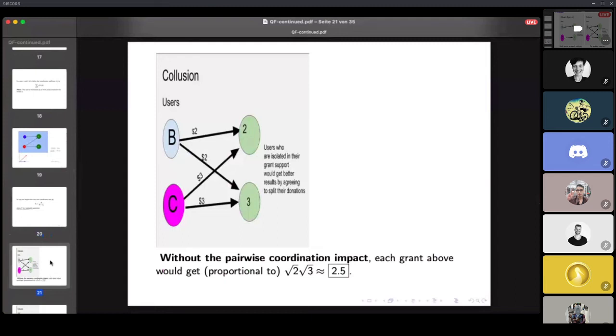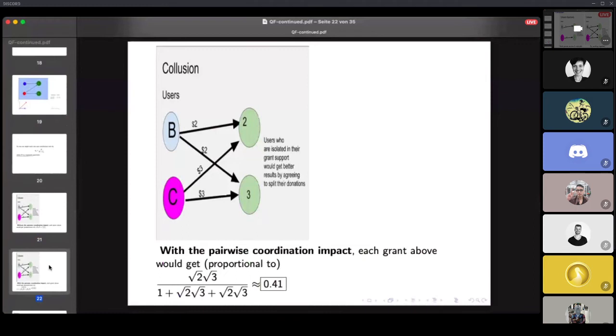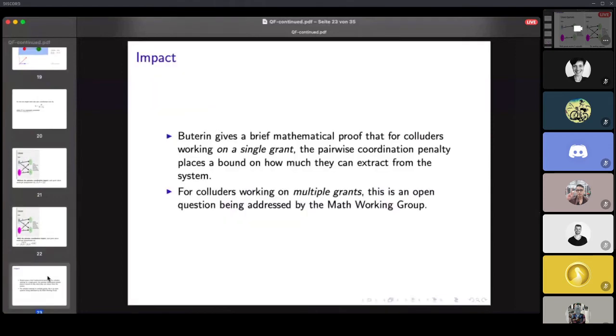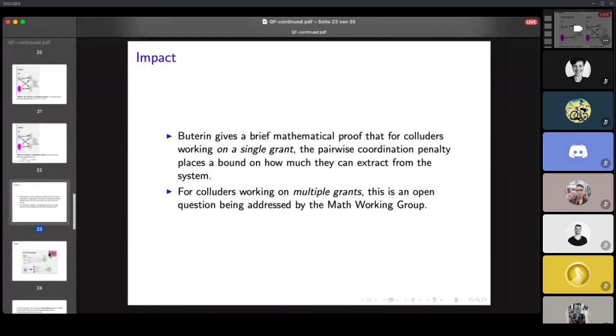Just as a basic calculation, we look at the collusion attempt that we started with. Without this pairwise coordination penalty, the score that would be used for calculating the grant matching would be 2.5. After you incorporate the grant matching penalty, it's 0.41. So in this instance, it was a significant reduction. Buterin actually gives a brief mathematical proof that for colluders working on a single grant, this will place an upper bound that you can give exactly on how much they could extract from the system. So they can't dominate the system. They may be able to get funds, but you can say it's not going to be more than this amount. For colluders who are trying to allocate their funds among multiple grants, this is exactly what we're addressing in the Math Working Group - what the optimal strategy would be and how much the pairwise penalty would be.